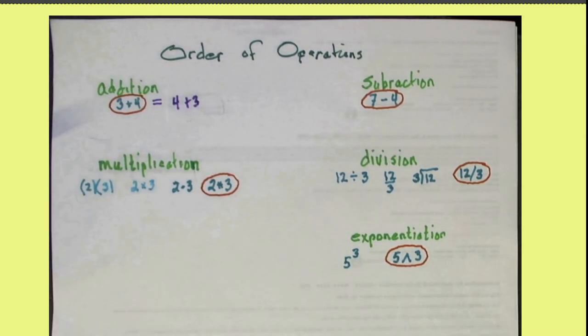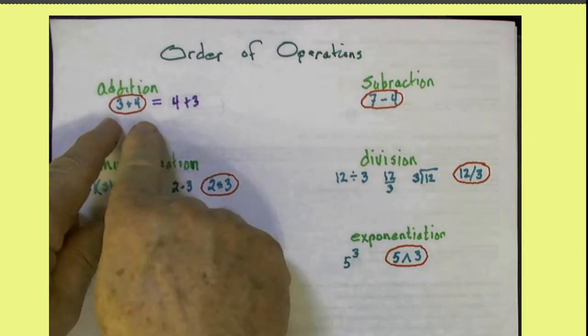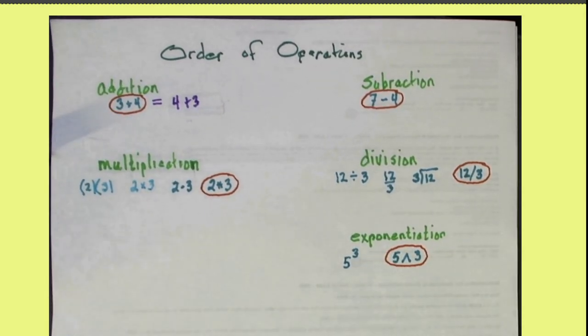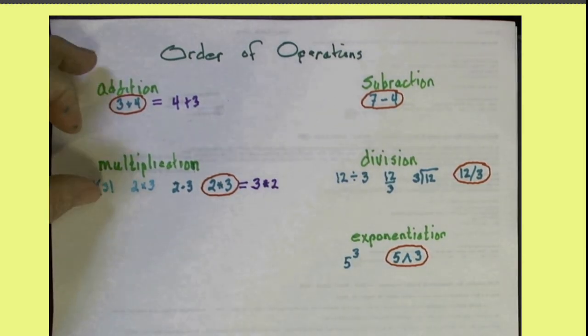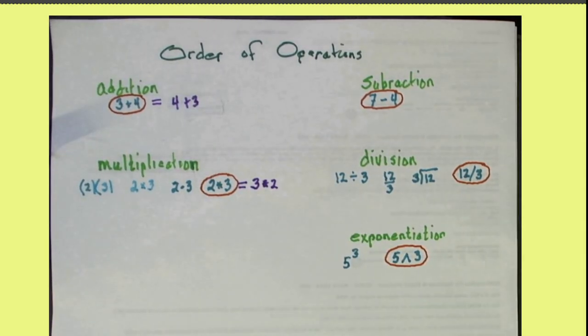Now notice that with addition and multiplication, you can commute the order that the operation is done. 3 plus 4 is always the same as 4 plus 3, no matter what two numbers you've got. Similarly, 2 times 3 is the same as 3 times 2. That's called a commutative property. None of these other operations have that property.